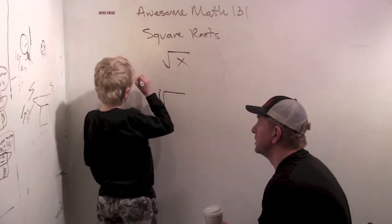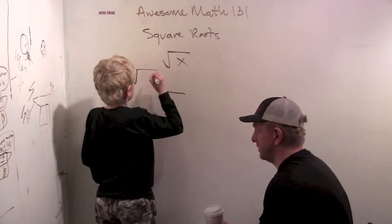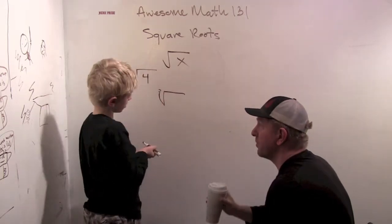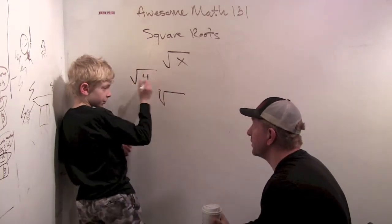If you have square root of four, it's the opposite. It's what you need to multiply to get four.